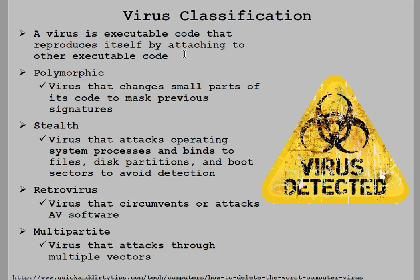With a polymorphic virus, once it executes it actually rebuilds itself and makes itself different than the last time it was compiled. This is very clever because if the program changes its actual syntax, the file has changed and thus creates a new hash. So every time it runs, it's changing. I call this the X-Men of viruses — it has many different shapes and many different ways to mask its signature.